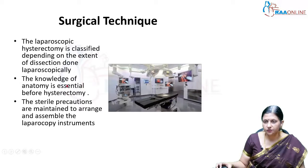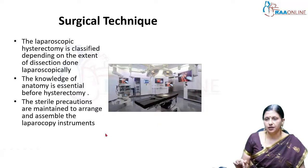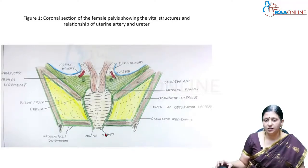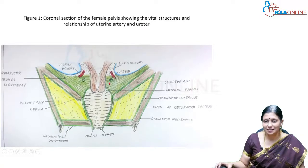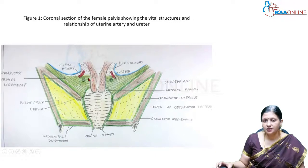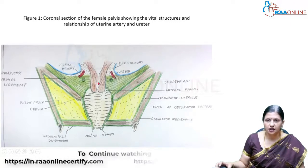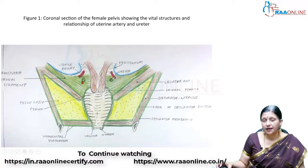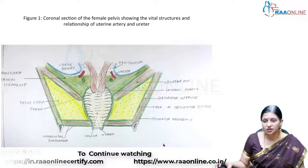Surgical technique is classified depending on the extent of resection performed laparoscopically. We should be thorough with anatomy, looking at the coronal section of the female pelvis to understand the relationship of the uterine artery. When a vaginal manipulator is inserted, the uterine arteries are displaced laterally, so pushing in the Rumi manipulator slightly helps minimize injury to the ureters and adnexal structures.